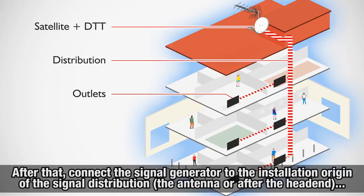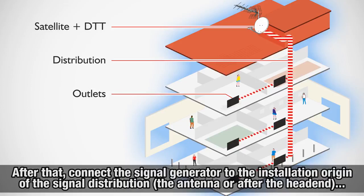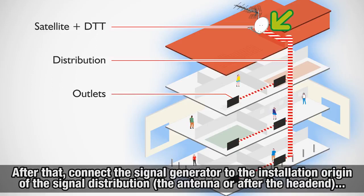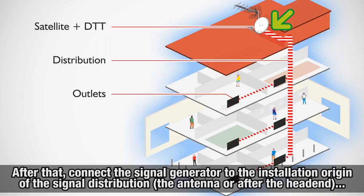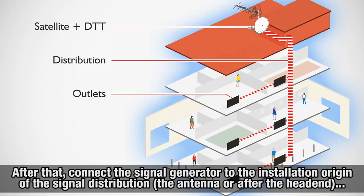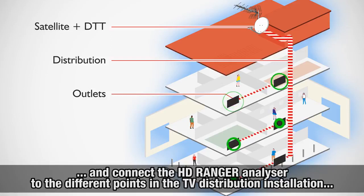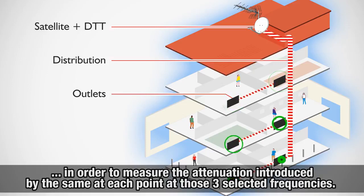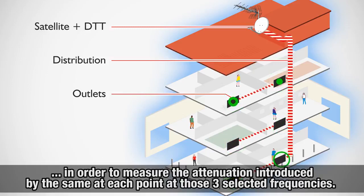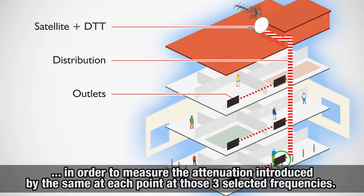After that, we will connect the signal generator where the origin of the signal distribution is in the installation — that is, after the antenna or after the headend — and connect the HDRanger analyzer to the different points in the TV distribution installation, in order to measure the attenuation introduced at each point at those three selected frequencies.